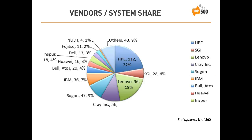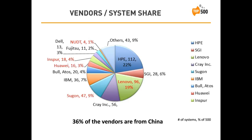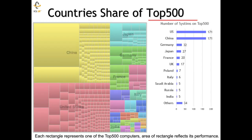Looking at the top 500 list again, these are the vendors that construct and integrate the 500 computers in use. HP Enterprises leads with 112 systems, followed by Lenovo and others. The striking thing is that China now has a number of vendors — they're able to secure 36% of the top 500 list in terms of vendors churning out computers. Looking at country share, we see where those computers are deployed, not just where they're made.